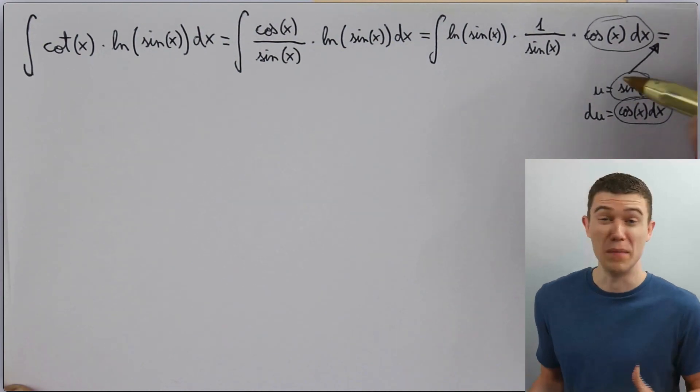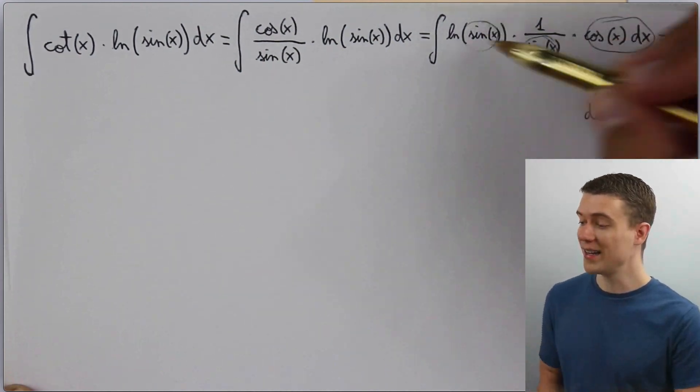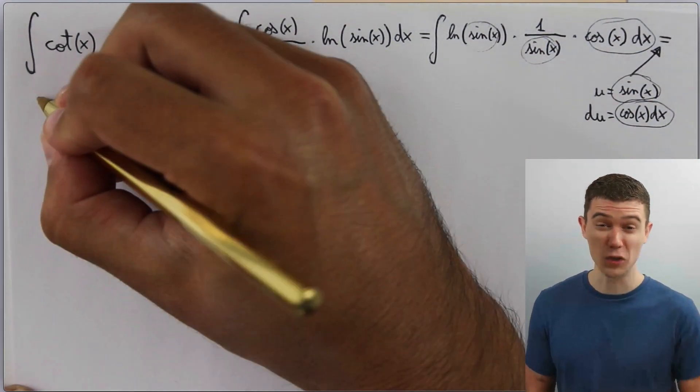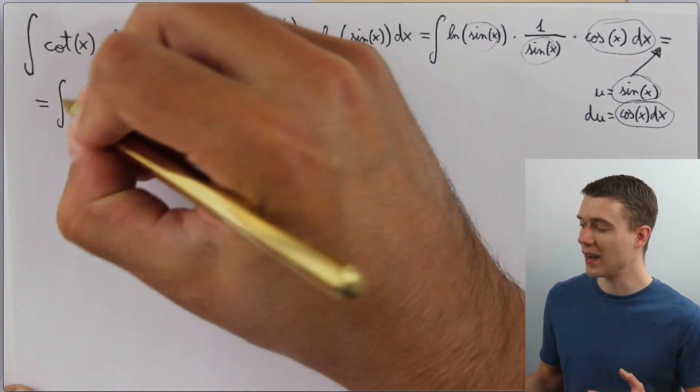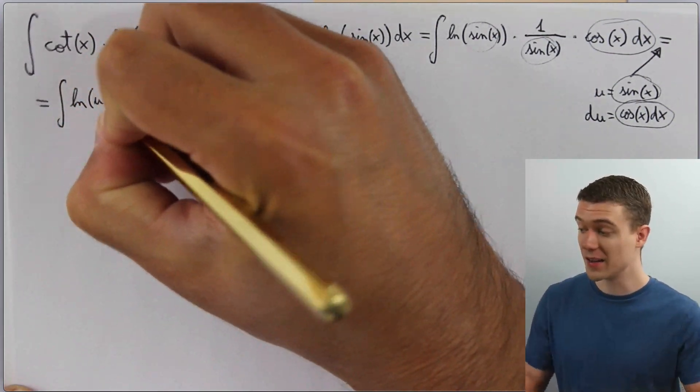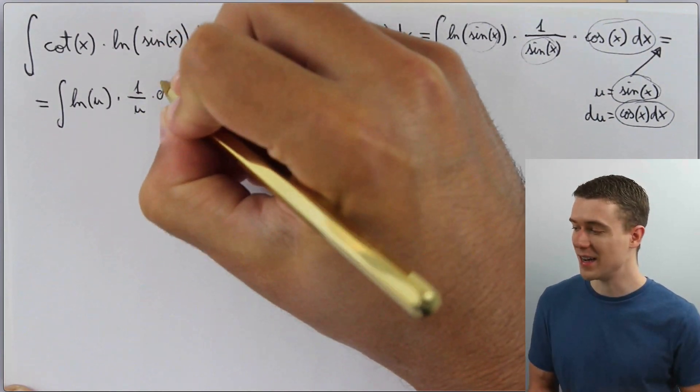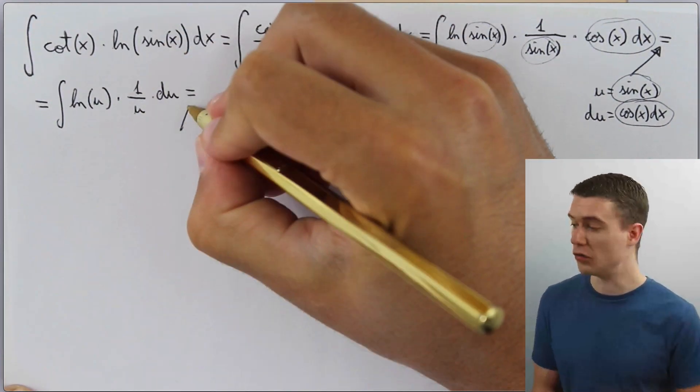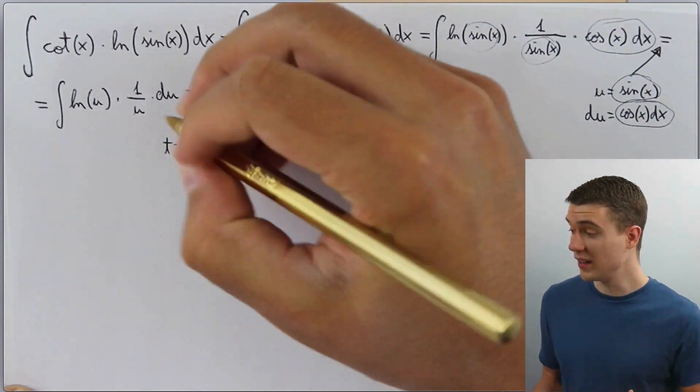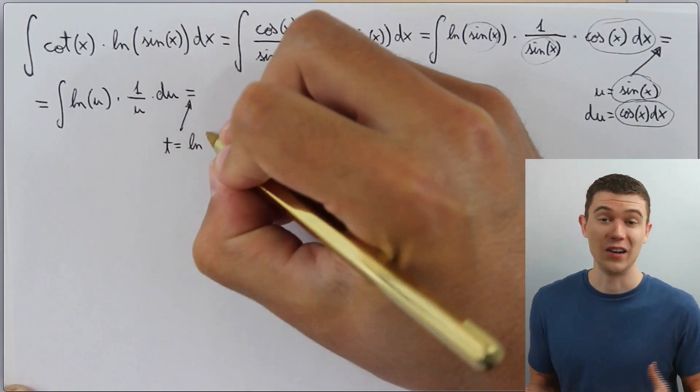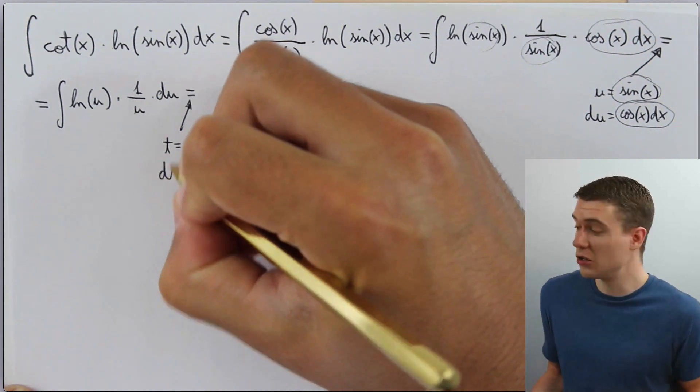And so we'll just make that substitution. We replace sine x, and it shows up two times. We replace sine with u inside the natural log and in the denominator. We replace the cosine x dx with du via our substitution. And actually, this is just a good candidate for another substitution.